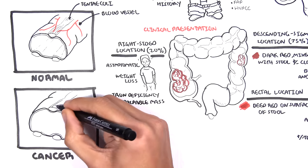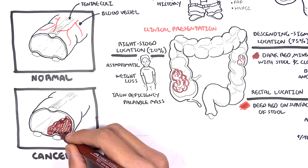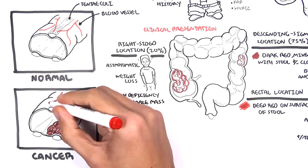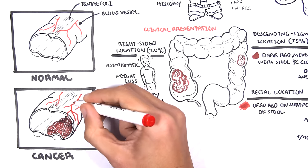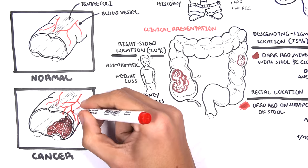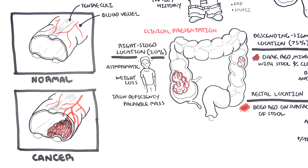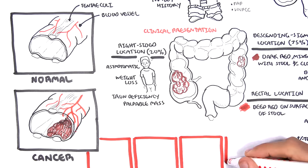When colon cancer occurs, the tumors can obstruct the lumen. The chemicals produced by the cancers can cause angiogenesis, formation of new blood vessels, which contribute to the bleeding found in colon cancer. So, patients often present with rectal bleeding.